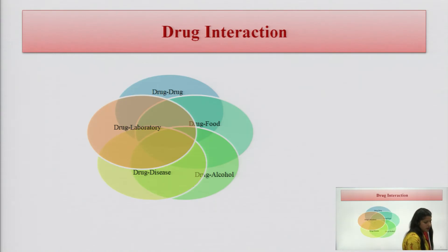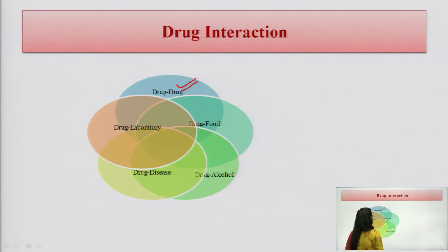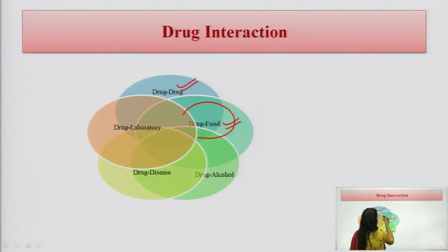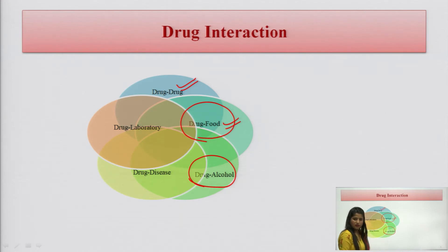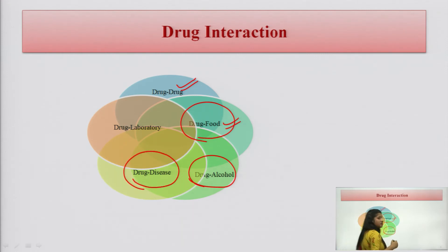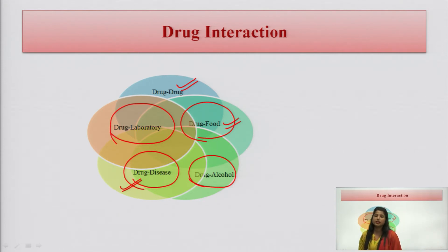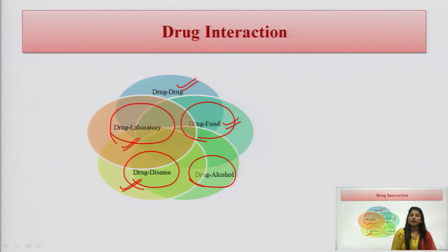Now we will study the different kinds of drug interactions. There could be drug-drug interaction, or interaction with food — for example, a drug may interact with milk, fatty food, or cheesy food. Then there is drug-alcohol interaction. A drug can also interact with a disease; some patients are suffering from comorbid conditions, so the drug interacts in that disease condition. Additionally, a drug can interact with a laboratory test — if a person is taking any drug, there can be a change in the measurement or levels of the laboratory test.